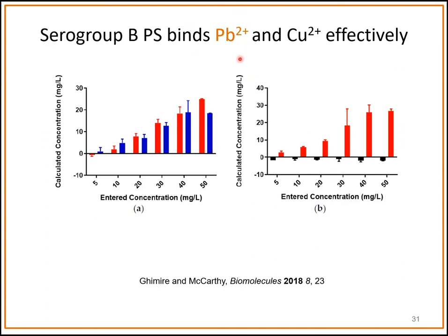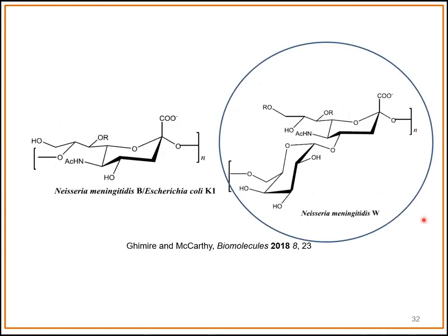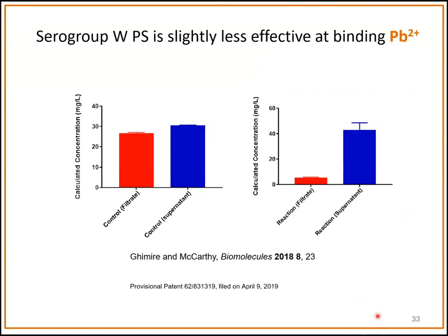Next, we used the serogroup W capsular polysaccharide, and we carried the studies through with copper as well. We see a similar phenomenon: in the control with no polysaccharide, there are roughly equal amounts in the filtrate and retentate. When we include polysaccharide, there is more metal in the retentate with a small amount still present in the filtrate. We can say that the serogroup W polysaccharide is slightly less effective at binding lead compared to serogroup B.